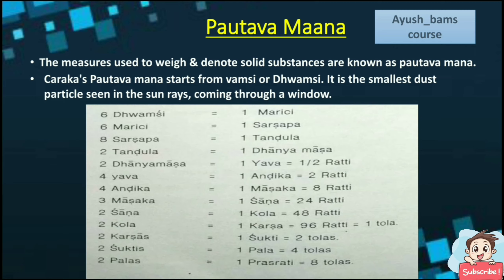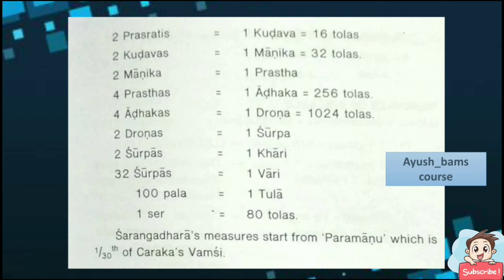2 Tandula equals 1 Dhanya Masha. 2 Dhanya Masha equals 1 Yava. 4 Yava equals 1 Andika. 4 Andika equals 1 Masaka. 3 Masaka equals 1 Sana. 2 Sana equals 1 Kola. 2 Kola equals 1 Karsha. 2 Suktis equals 1 Pala. 2 Pallas equals 1 Prasruti. 2 Prasrutis equals 1 Kudava. 2 Kudavas equals 1 Manika.